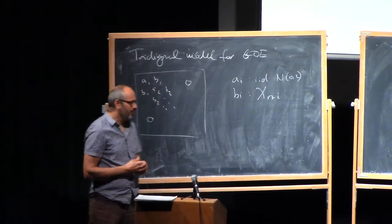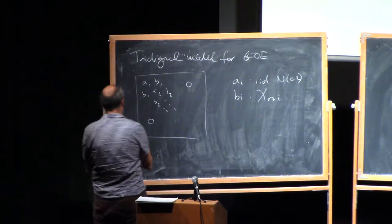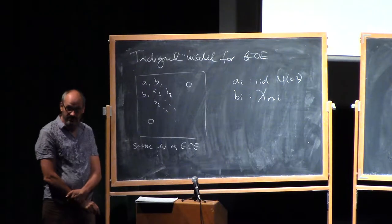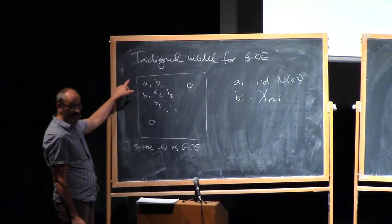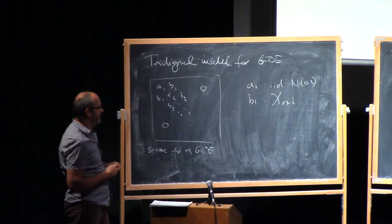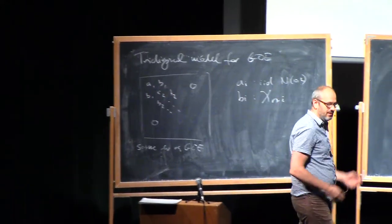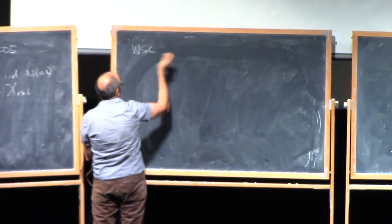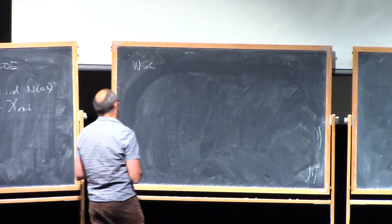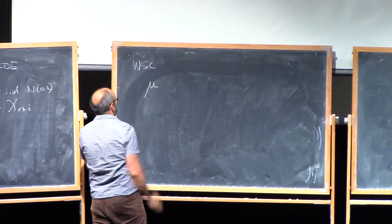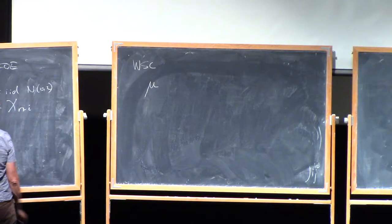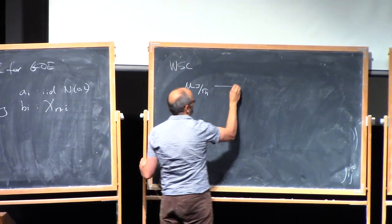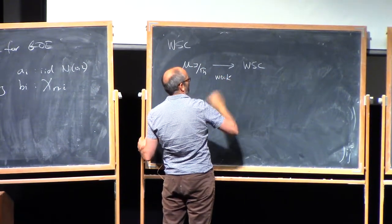And what we proved is that this matrix has the same eigenvalues as GOE. And moreover, not just the same eigenvalues, but also the same spectral measure at the first entry. Then this converges to the Wigner semicircle law weakly in probability.